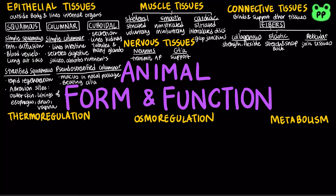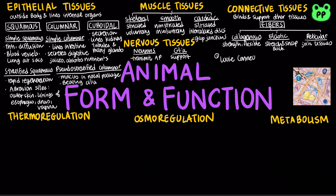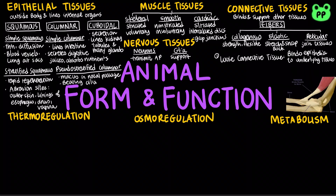There are six main types of connective tissues. Loose connective tissue binds epithelia to underlying tissues and holds organs in place; it includes all three types of fibers. Fibrous connective tissues are dense with collagenous fibers and are found in tendons, which attach muscles to bones, and ligaments, which connect bones at joints.